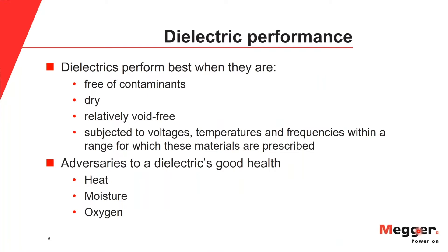Insulating materials prevent real or resistive current flow and support an electric field best when they are free of contaminants, when they're dry, and when they're relatively void-free — which emphasizes the importance of satisfactory oil impregnation. Keep in mind that solid paper insulation in a transformer has inherent voids, so it's important that oil fills these voids completely to avoid breakdown of the field across them.